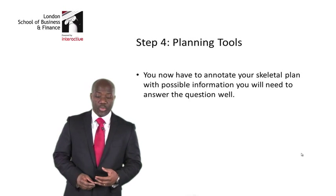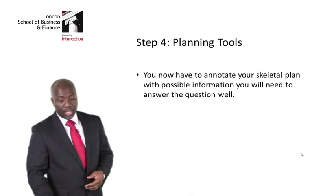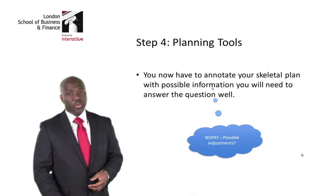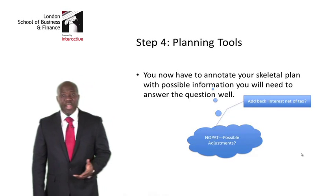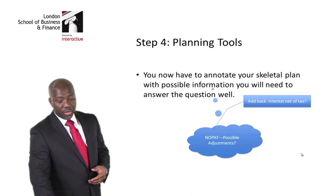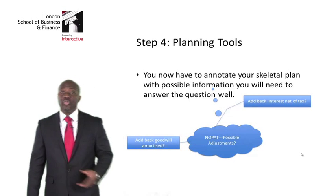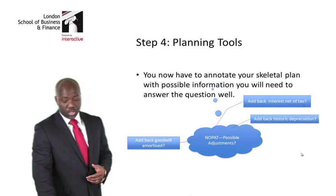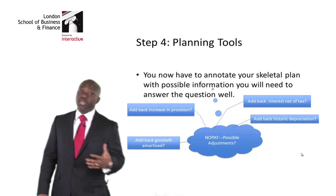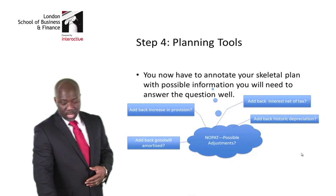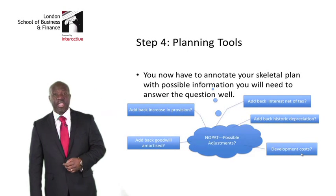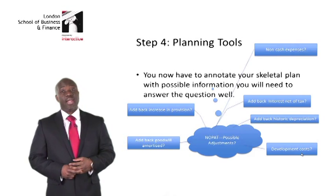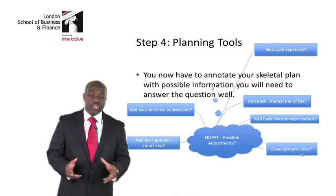For example, to get to NOPAT I need to consider possible adjustments. These include: adding back interest net of tax, adding back amortized goodwill for the period, adding back any historic cost depreciation, adding back any increase in provisions or allowance for bad and doubtful debts, adding back development costs, and adding back any other non-cash expenses.